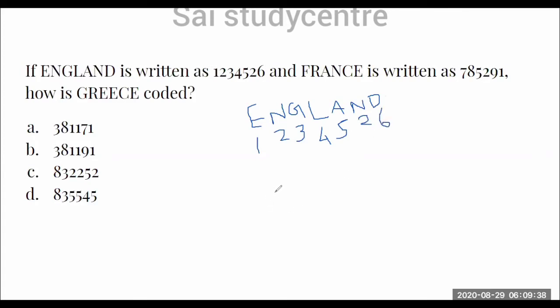Again N is given as 2, so we can conclude that N is given as 2 always. And another word is also given: France. So now we are going to write France. What are all the letters given for these alphabets? We will write it below. This is the general method we have to use. When some value is given for an alphabet, it is 7, 8, 5, 2, 9, 1.